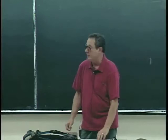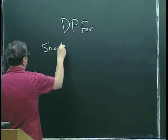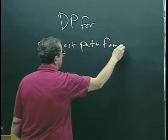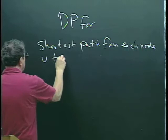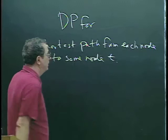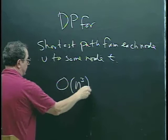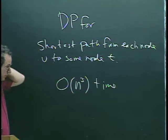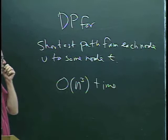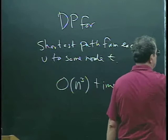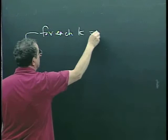We were talking about shortest paths and dynamic programming for the problem of finding the shortest path from each node V to some node T. We developed an algorithm that was order n cubed time in the worst case, with an outer loop for each k equal 1 to n.